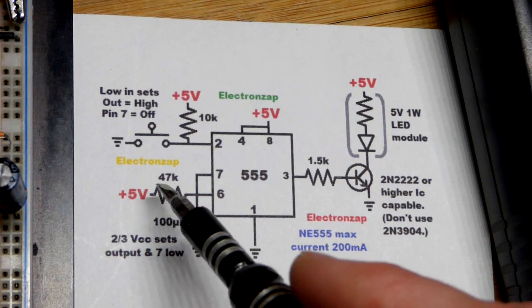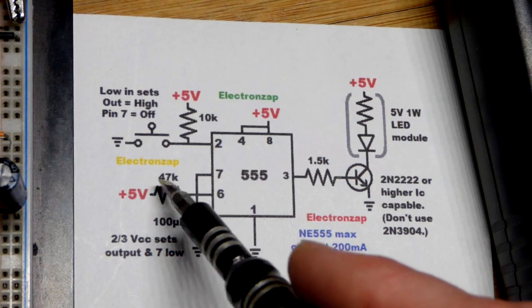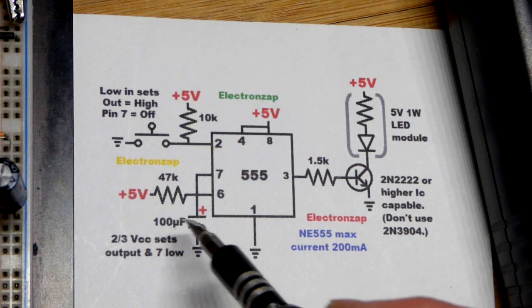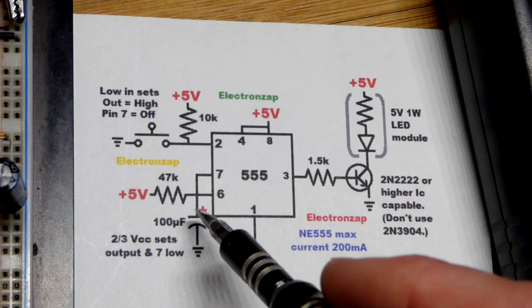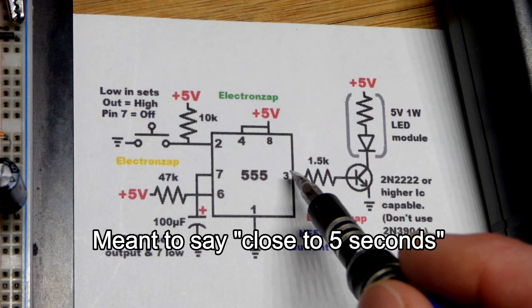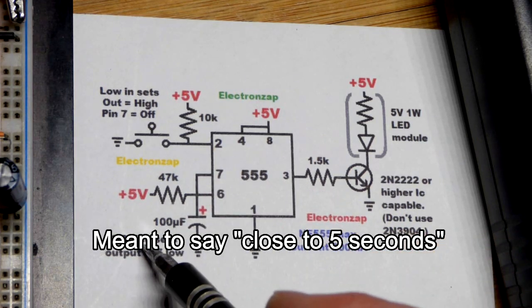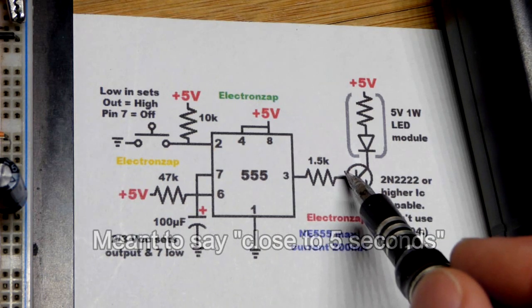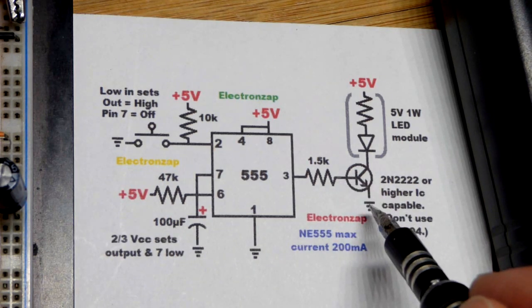But that will set the output high and start the capacitor charging. So the values of these two components determines the charge time. Higher values take longer, smaller values are quicker. As you saw, probably somewhere close to 5 seconds it took for the capacitor to charge to 2/3 supply voltage. That's when the output is high and the transistor is on.